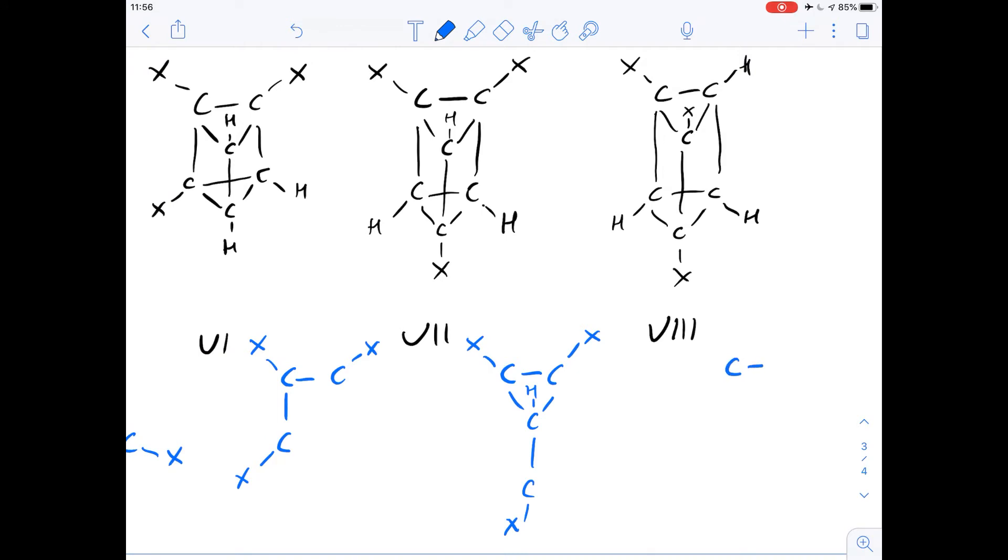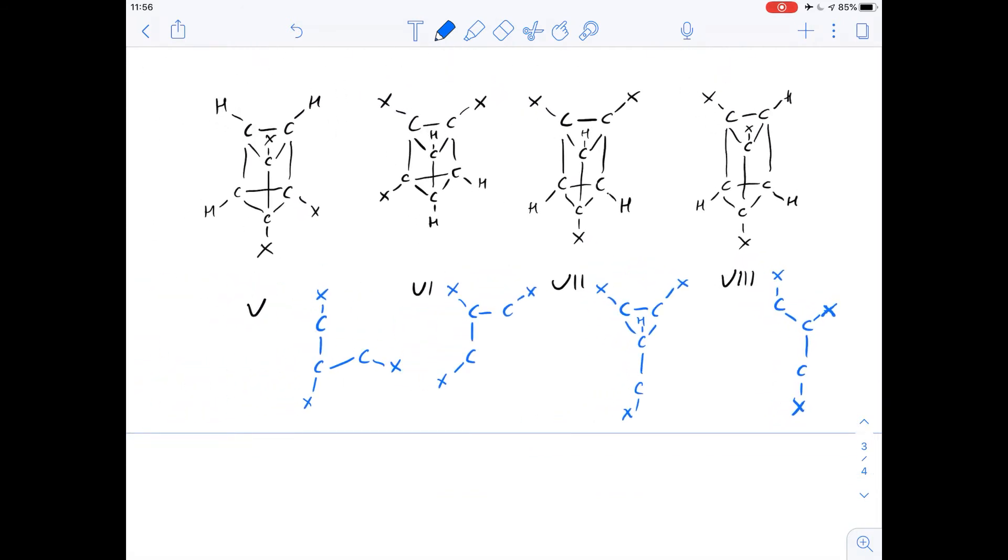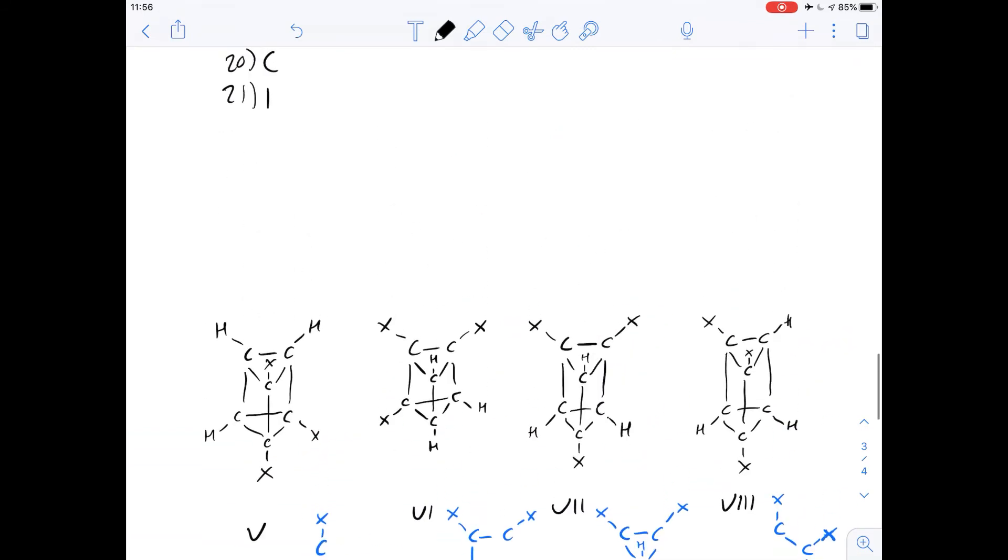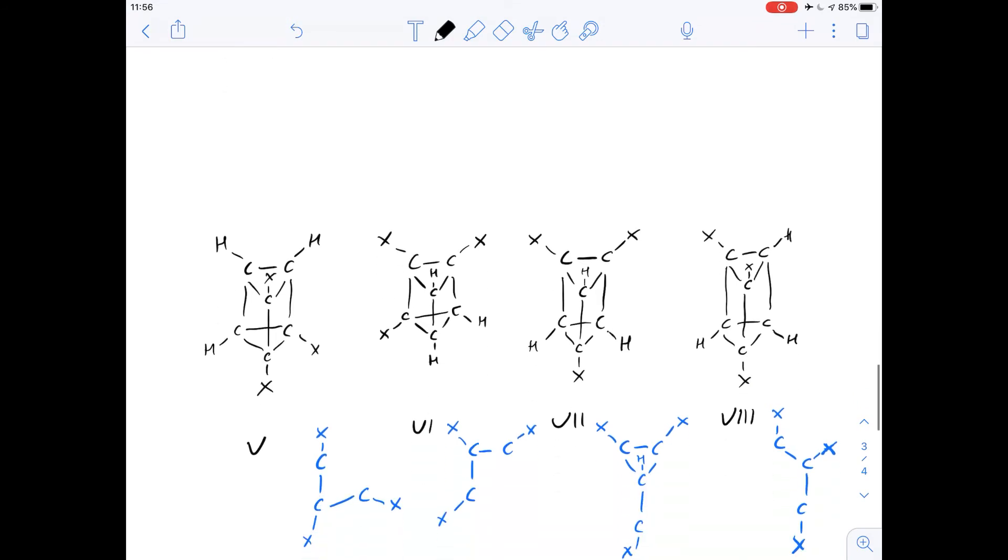But what about number 8? Well let's draw the same thing again. We've got a carbon here that has a substituted group and we've got another one down here that has a substituted group. And you can see that structure 8, structure 6, and structure 5 are essentially the same shape whereas structure 7 is different. Going back to the question, this shows that the answer is B because structures 5, 6, and 8 are equivalent but 7 is different.